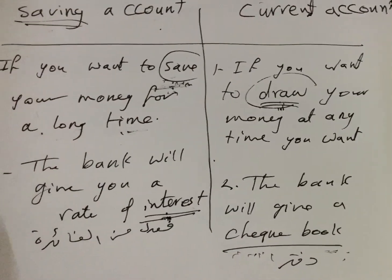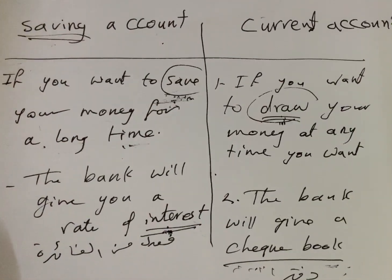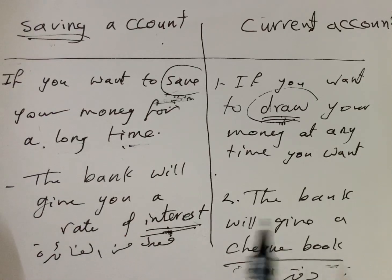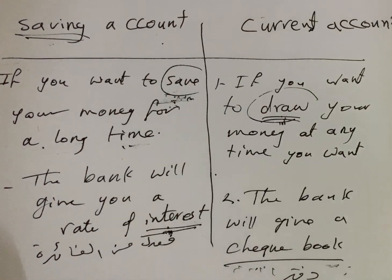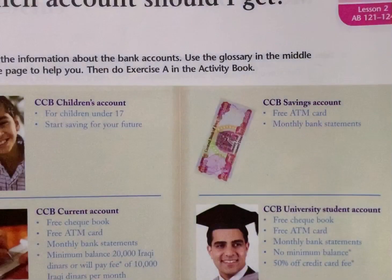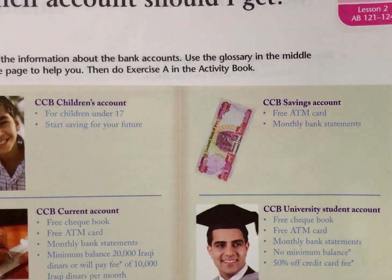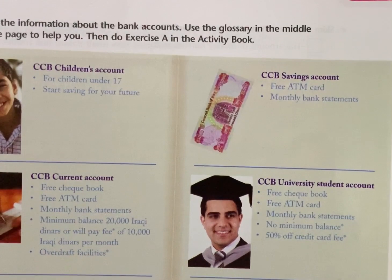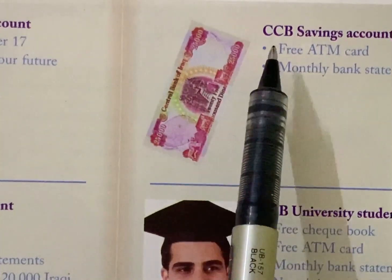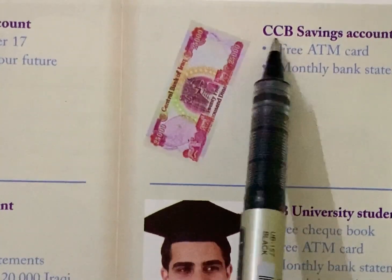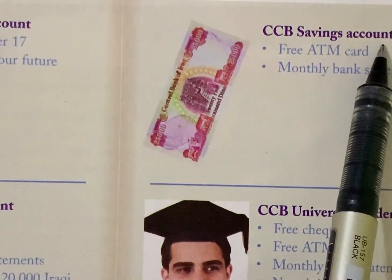بعد ما أخذتوا فكرة عن هذه المقارنة، أتمنى تكتبوها حتى تفهموها وحتى نعرف حل التمرين. راح نجي نكمل الحسابات. هسه نجي للنوع الثاني — Saving Account — حساب التوفير.